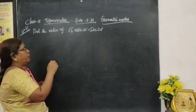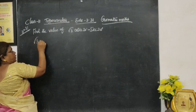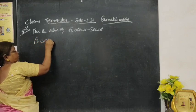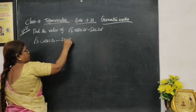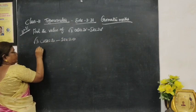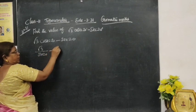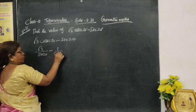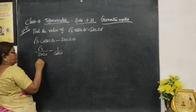Find the value of √3 csc 20° - sec 20°. How do you write the value of csc 20°? You can write it as 1/sin 20°. Then secant is 1/cos 20°. Cosecant is 1/sin and secant is 1/cos.